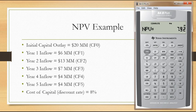Since we're here calculating NPV, most people will also calculate IRR. Since we already have all these cash flows stored, let's compute IRR for this example. All we have to do is press IRR and then press compute. Our IRR is 24.06 percent. Remember, IRR is the discount rate that would make NPV equal to zero.